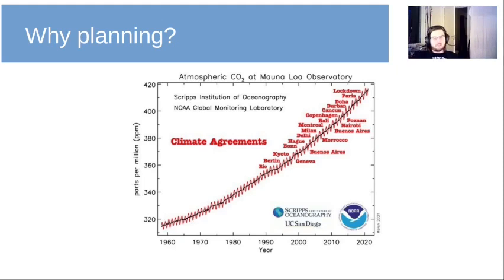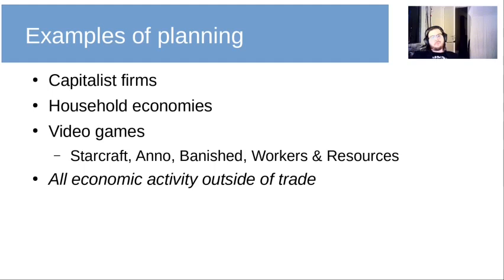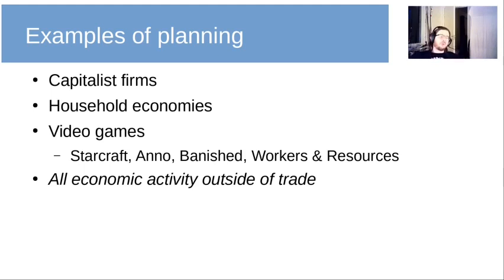I have some examples as well. The one example everyone should be familiar with is the capitalist firm. In capitalism, firms are all planned internally — you don't have, say, the HR department haggling with the engineers or anything like that. It's all as one unit striving towards one goal; it just happens the goal is to generate profit. The trade is really just the interface used between other firms.